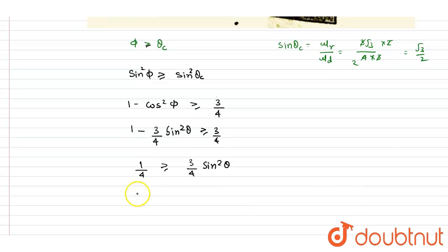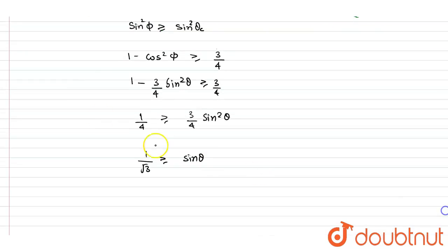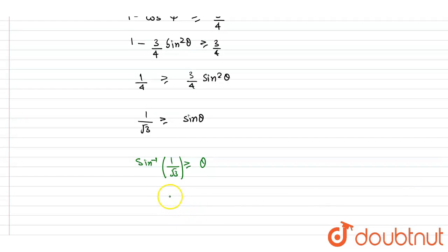So from here you will get sin θ should be less than this. So if you see, from here if you take sin inverse both sides, so I will write down θ should be less than sin⁻¹(1/√3). So sin⁻¹(1/√3) is nothing but 35.26°.